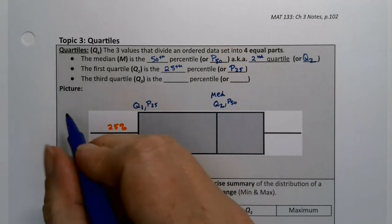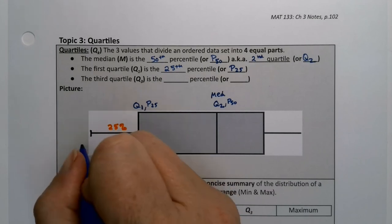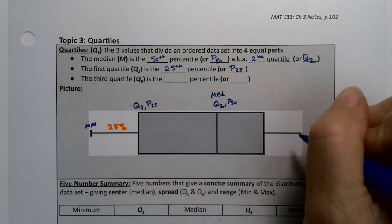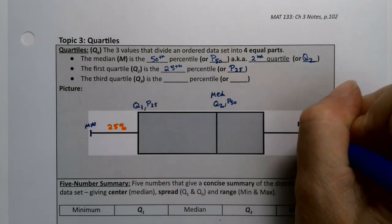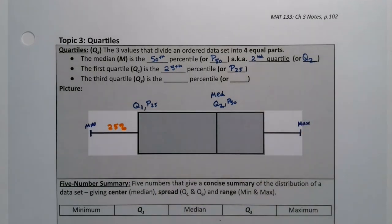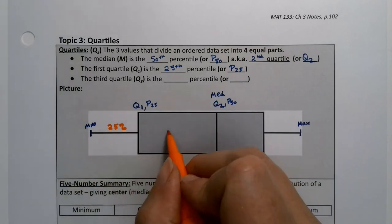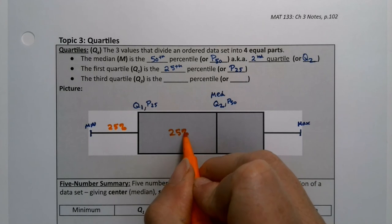And over here, you're thinking, what's that value right there? That's the minimum, the lowest value you have. And over here is the maximum. So if the median has 50% below it, that means there's 25% here and there's 25% in here.